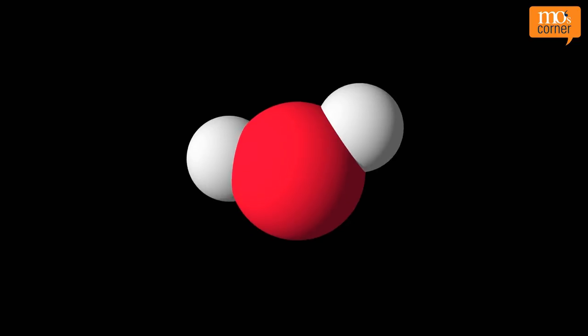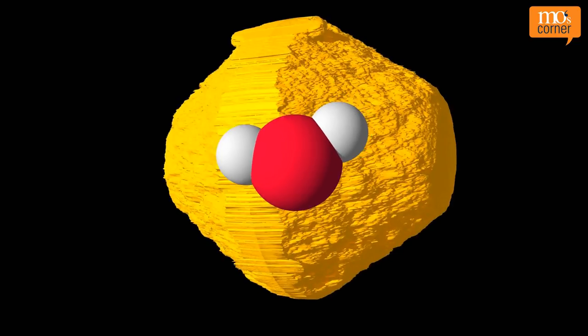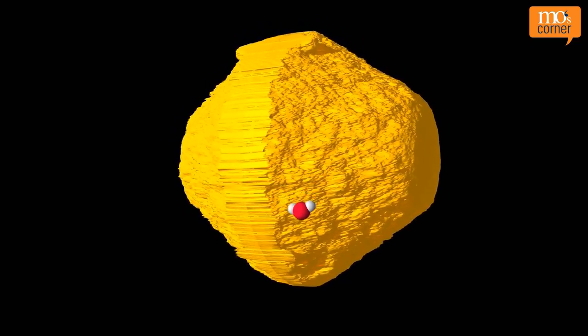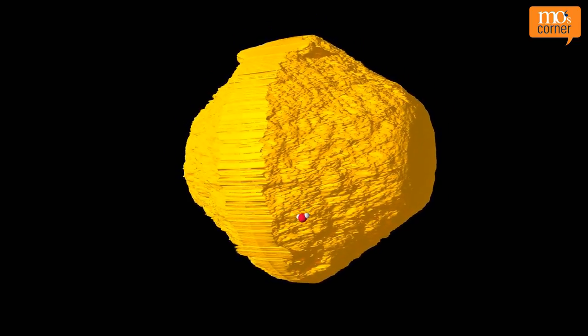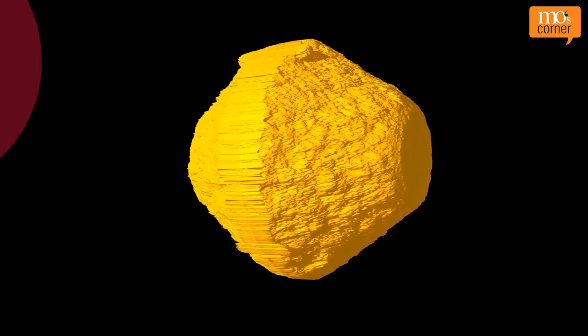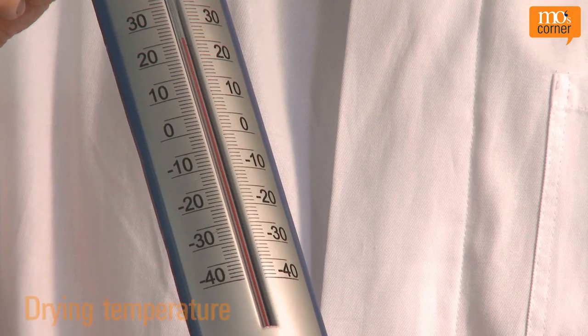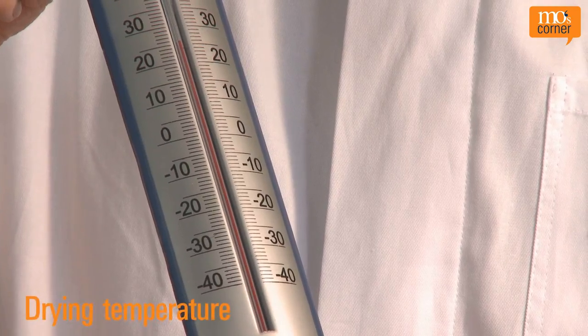There are many different types of plastic granules. They're not only different in color and shape, but also in their chemical structure. Some absorb moisture from the air; for others, the moisture remains on the surface. Materials which absorb moisture are called hygroscopic.